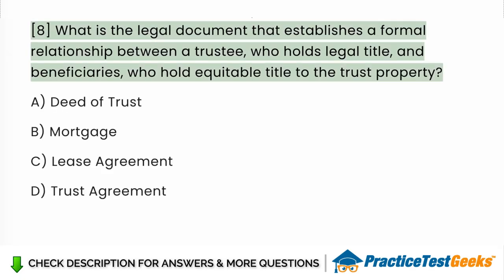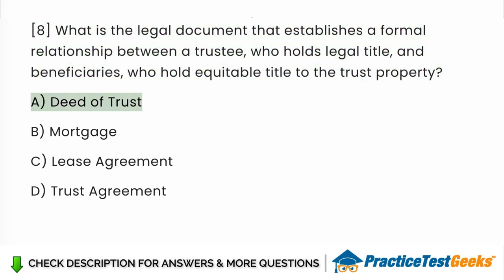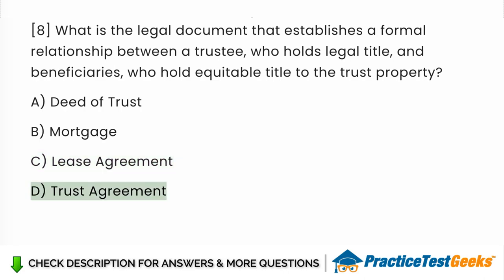What is the legal document that establishes a formal relationship between a trustee, who holds legal title, and beneficiaries, who hold equitable title to the trust property? a. Deed of trust. b. Mortgage. c. Lease agreement. d. Trust agreement. Answer: d. Trust agreement.